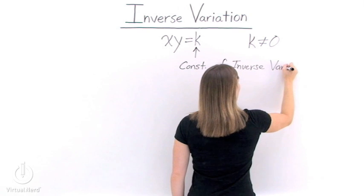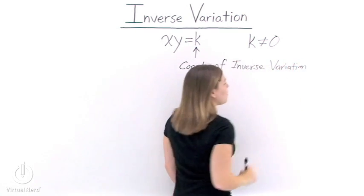So if we know k and we know one of our other variables, then we can find the other one.